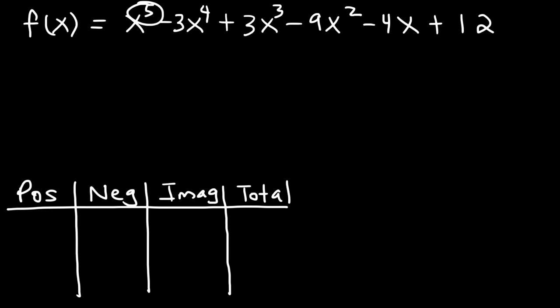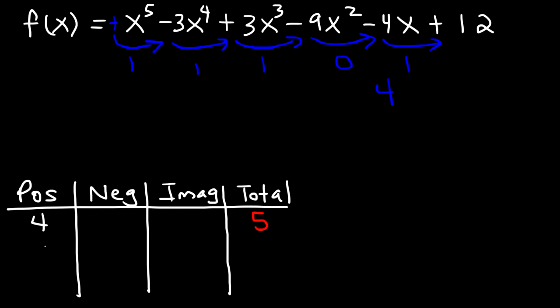Notice that we have a fifth-degree polynomial, so the total is going to be 5. Now let's count the sign changes for f(x): positive to negative — one change; then another change; positive to negative — another sign change; negative to negative — not a change; negative to positive — that's a sign change. So we have four sign changes. The positive real zeros could be 4, or 4 minus 2 = 2, or 2 minus 2 = 0. So it could be 4, 2, or 0.